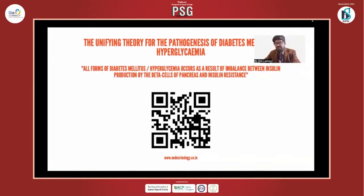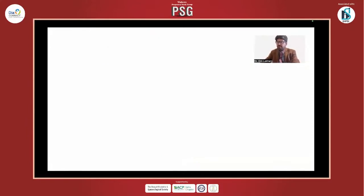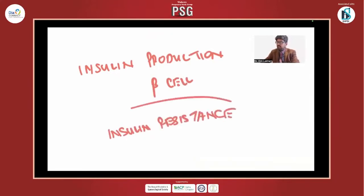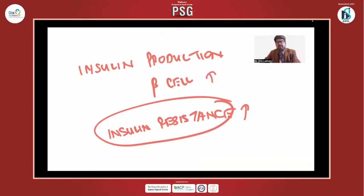What I believe is that all forms of diabetes or hyperglycemia occur as a result of an imbalance between insulin production by the beta cells of the pancreas and insulin resistance. Because of obesity or ectopic fat deposition and visceral fat, insulin resistance keeps increasing. But the body doesn't sit quietly — it keeps increasing insulin production by the beta cell to match this insulin resistance. But there comes a point where insulin production is not able to match insulin resistance, and that is when diabetes occurs. In all forms of diabetes, this imbalance exists.